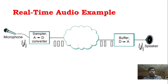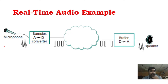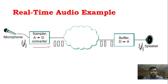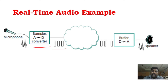Now, if you take a real-time audio example — when you listen to audio or speak into a microphone — the signal is received and converted into digital samples. We digitize the signal and then packetize it. Different packets are then transferred across the network.